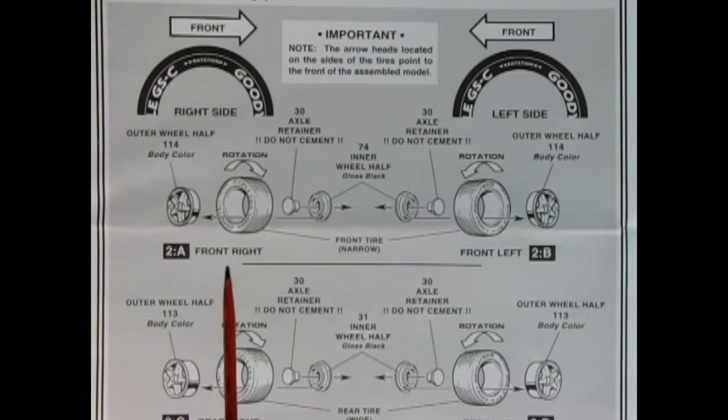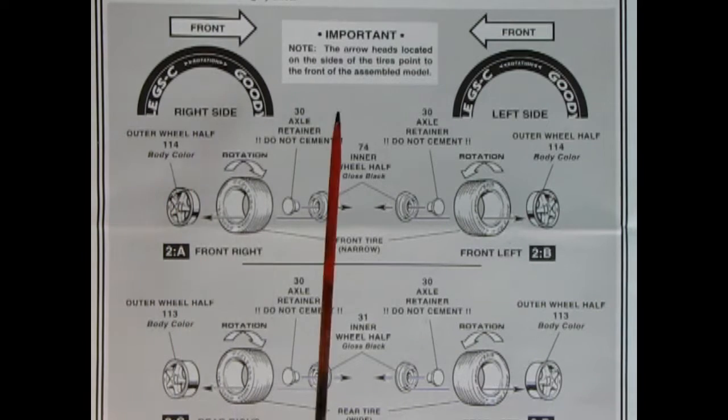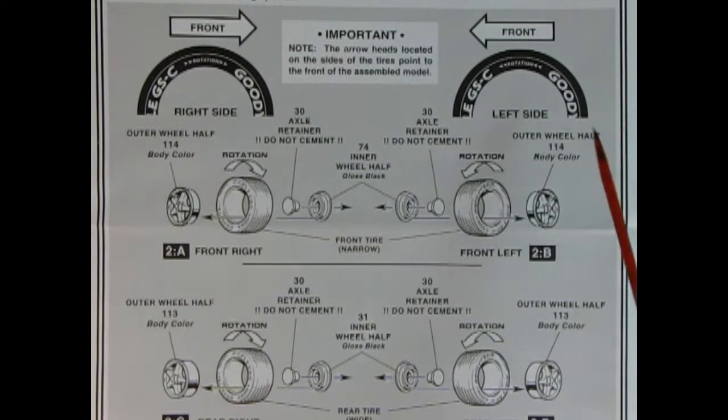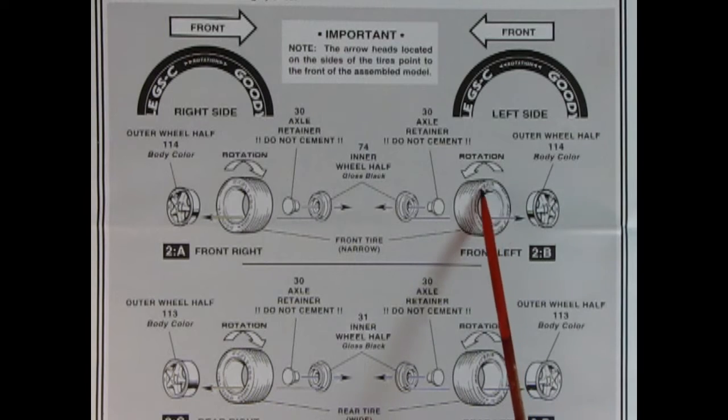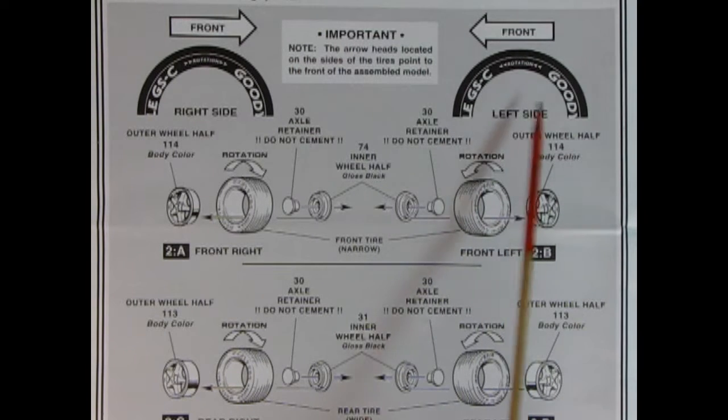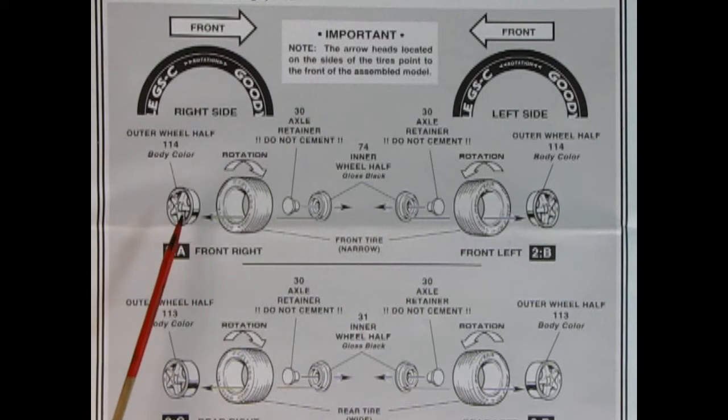So now we have our wheel assembly. What we have are the directional Goodyear Eagle tires. Remember that the rotations, they actually say left and right on the tires. So you'll know which way to go. So then we can pop in our wheel in there. We've got our wheel retainer and the wheel back. You want to do this in the front and down here is the rear.